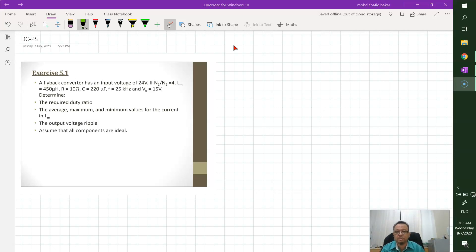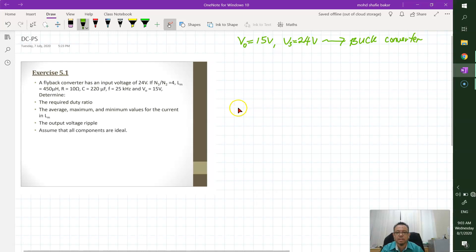Now we try to tabulate the parameter that involved in this question. Begin with Vout equals to 15 volt, Vinput or Vs equals to 24 volt. So meaning that this flyback is operating as buck converter.